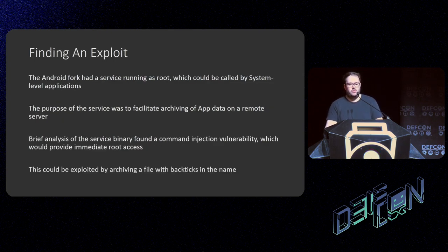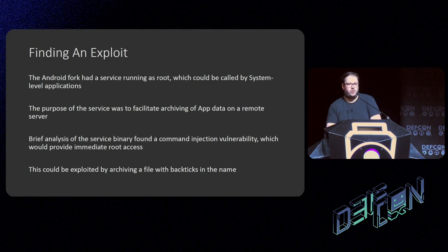The Android fork had a service running as root at all times, called by system-level applications for facilitation of cloud upload and archiving of app data. It would take all the data from the user's protected application and cordoned-off partitions, package it together, and upload it to the cloud. Brief analysis of this binary found an immediate command injection vulnerability: if you had a file within the filesystem with backticks in the name, you could execute commands within it. You would upload this file, download it again, and as it was restoring, it would execute whatever command was in the backticks. Very basic.